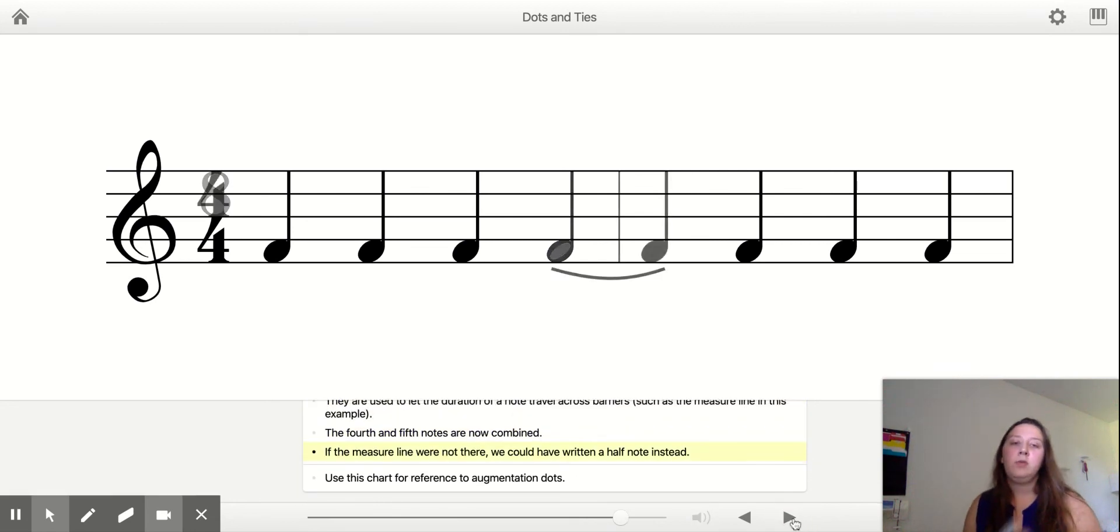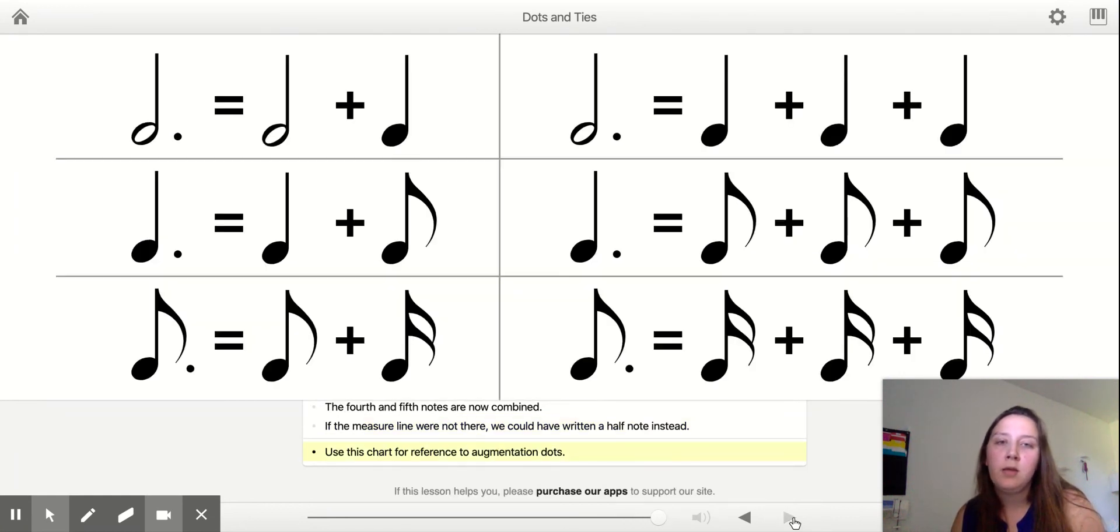If the measure line were not there, we could have written it as a half note instead, but because there was the bar line or the measure line they're calling it, we had to separate it into two notes with a tie, two quarter notes with a tie. Cool. That's all. Thank you.